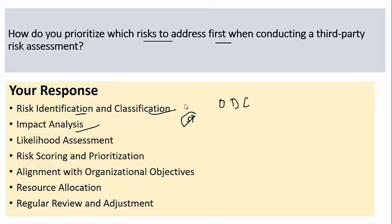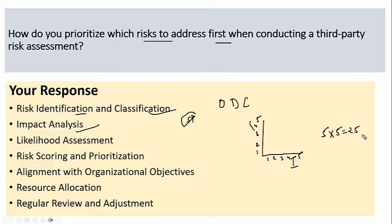I use a risk matrix to combine impact and likelihood scores to calculate an overall risk rating for each identified risk — also called a heat map. For example, with likelihood and impact each scored 1-5, a score of 5×5 equals 25, which is the maximum risk. High impact combined with high likelihood must be prioritized first, followed by those with either high impact or high likelihood.